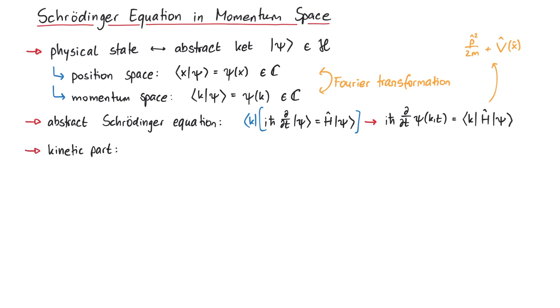First, for the kinetic part, we insert a completeness relation such that the operator has momentum states on each side, and we get the wave function psi tilde. Now, we can let the operator p act twice on the state k-prime, which yields the eigenvalue h-bar squared k-prime squared. Next, the bra-ket product of two momentum eigenstates is simply a delta function, which helps us to perform the integration.